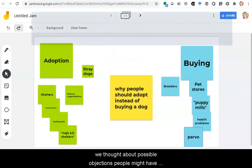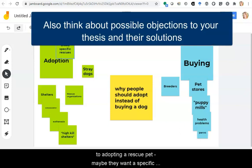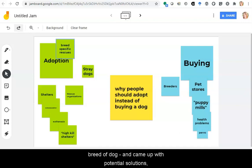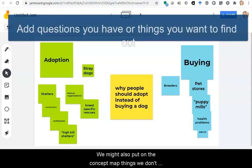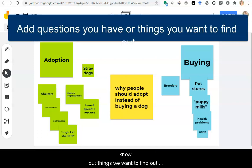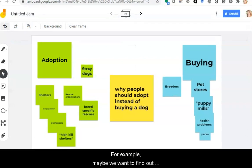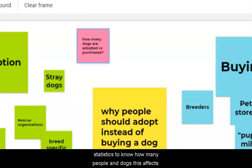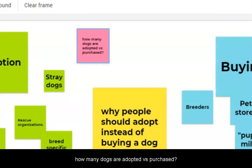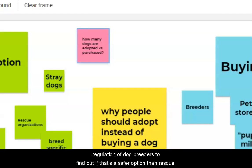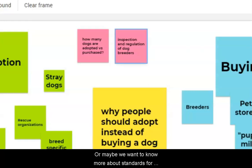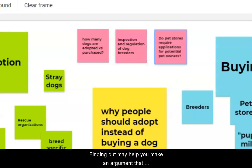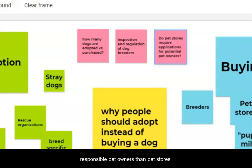Finally, we thought about possible objections people might have to adopting a rescue pet — maybe they want a specific breed of dog — and came up with potential solutions like breed-specific rescues. We might also put on the concept map things we don't know but want to find out in order to support our argument. For example, maybe we want to find out statistics on how many people and dogs this affects, or how many dogs are adopted versus purchased. Or maybe we want to know about inspection and regulation of dog breeders, or standards for owners. You might know that some shelters require applications and references for potential adopters, but do pet stores? Finding out may help you make an argument that shelters are more careful about adopting dogs to responsible pet owners than pet stores.